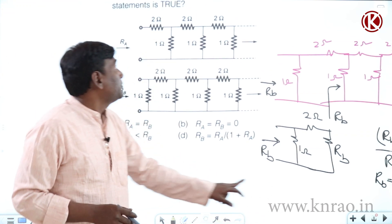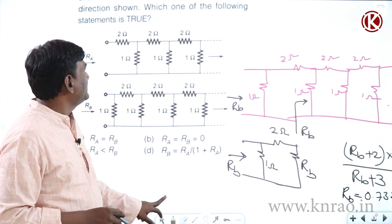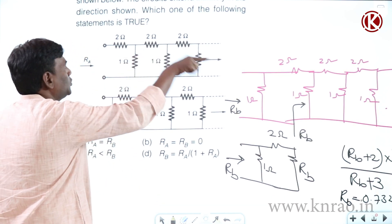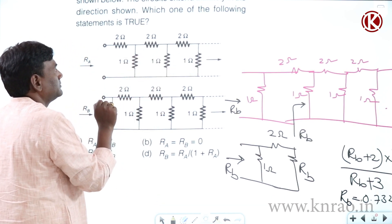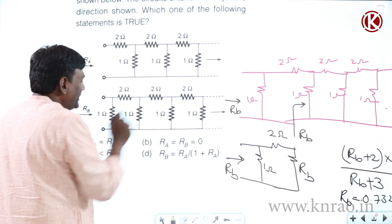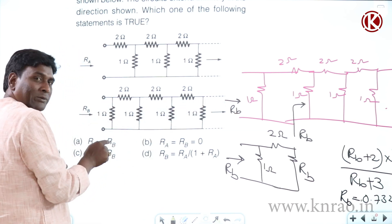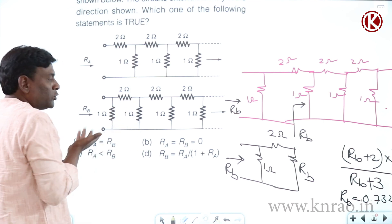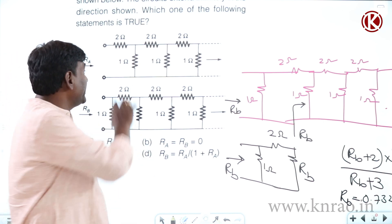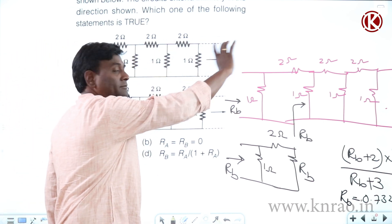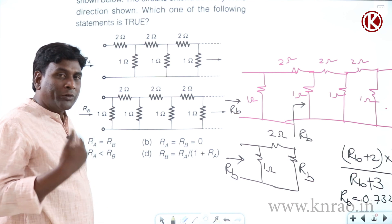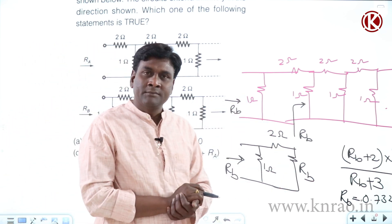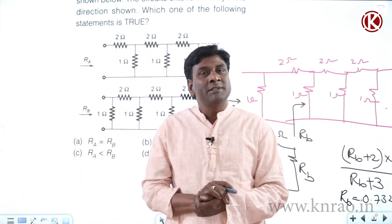Solving the given problem is easy. For the Ra circuit (2-1-2-1), there's an extra 1 ohm connected, so 1 in parallel with Ra gives Rb — problem solved. If they give only one configuration and ask you to find R_eq, we solve it in this way using the self-similar property of the infinite ladder.